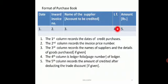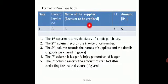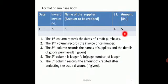The fourth column is ledger folio — the page number of the ledger. Each creditor or supplier has one ledger to track amounts purchased and paid during the month; the page number of their ledger account is recorded here. LF is the page number. The fifth column records the amount of credit purchases from each supplier.